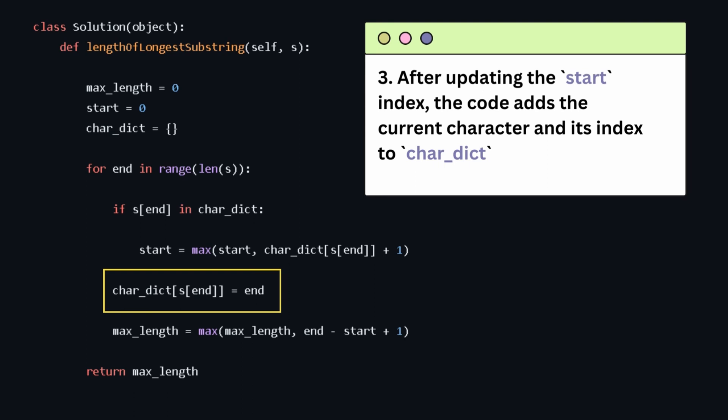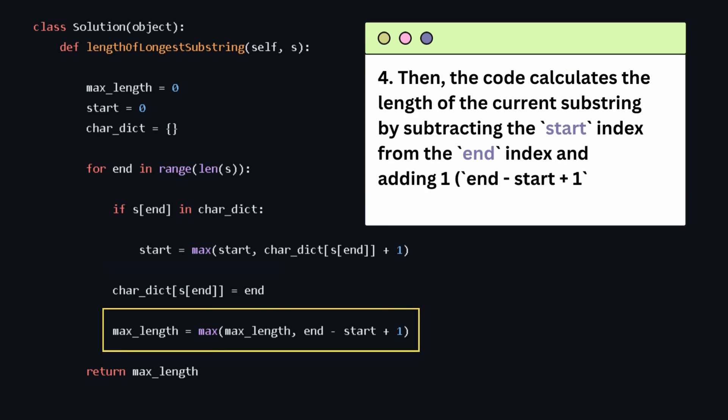Three, after updating the start index, the code adds the current character and its index to the character dictionary or updates its index if the character is already present. Then the code calculates the length of the current substring by subtracting the start index from the end index and adding 1.